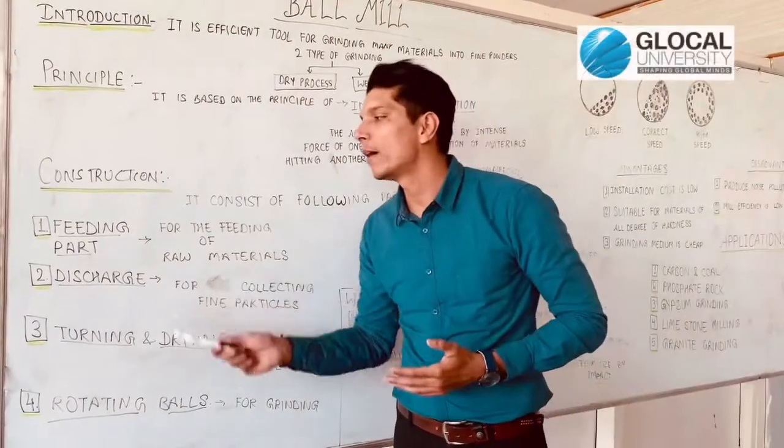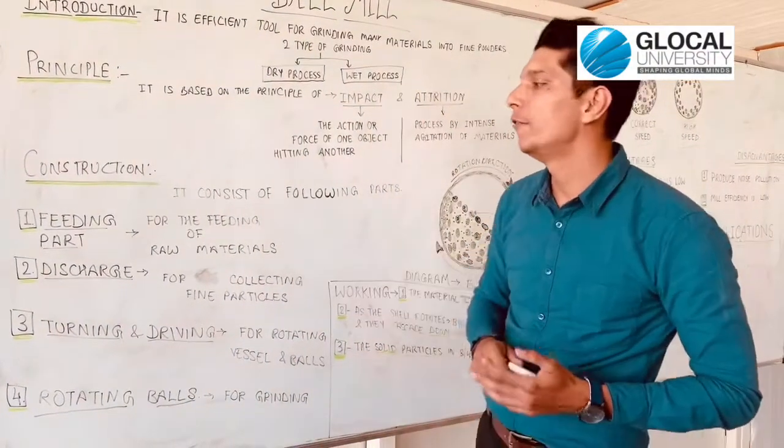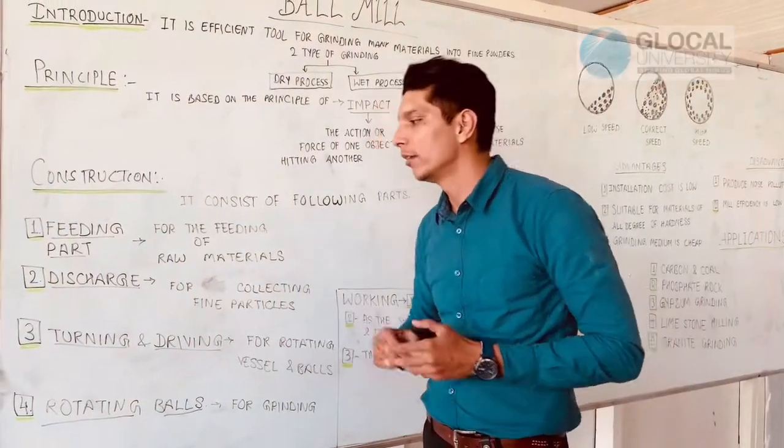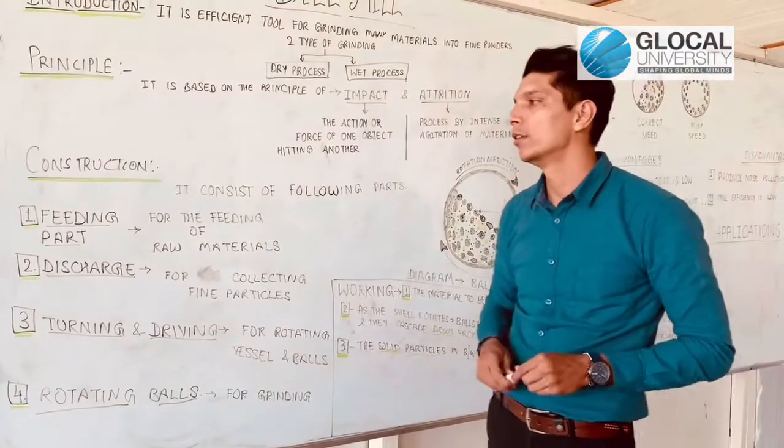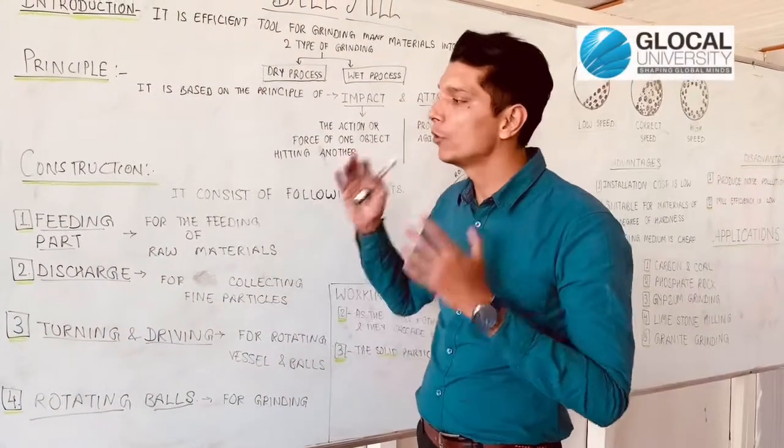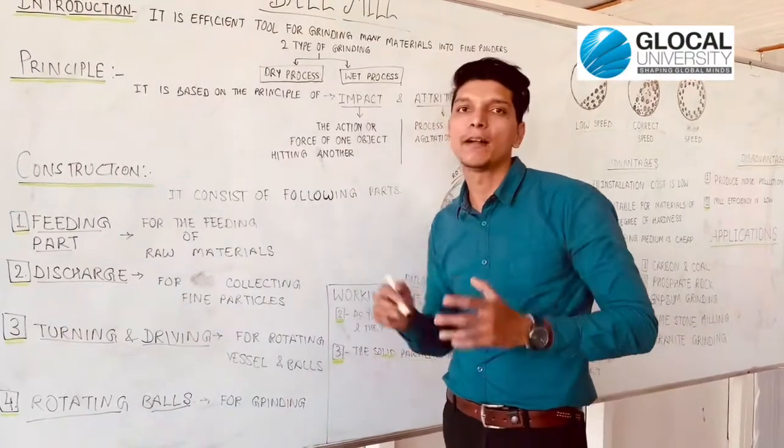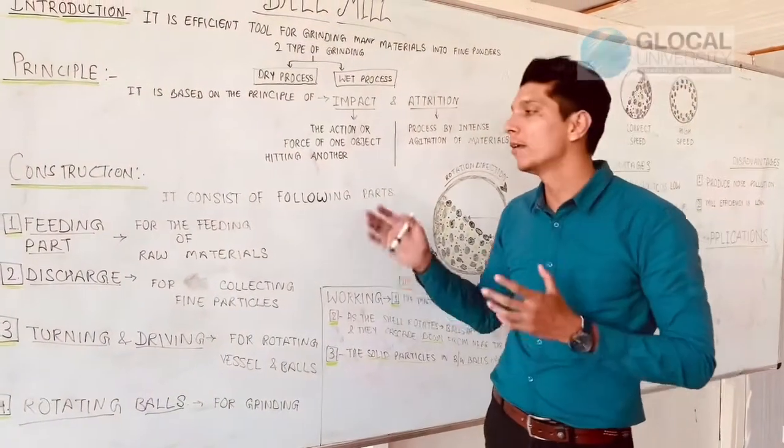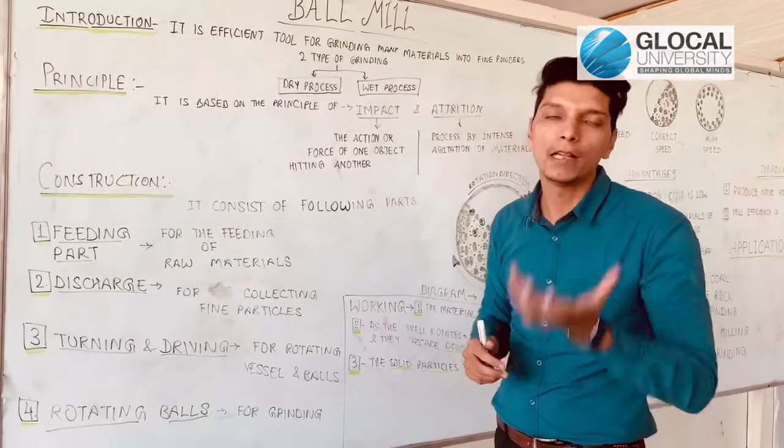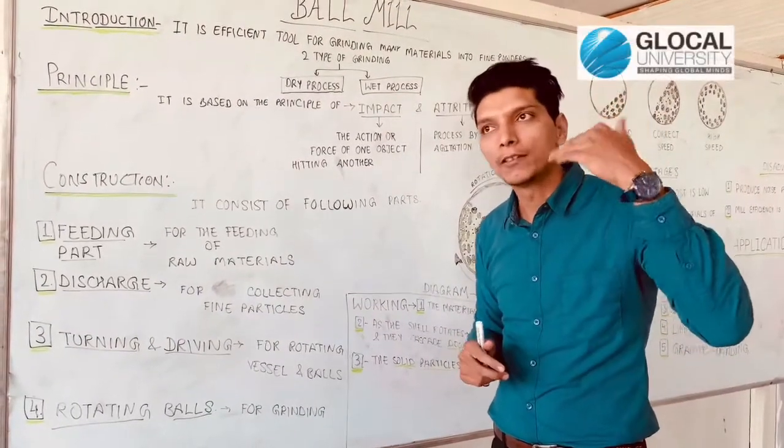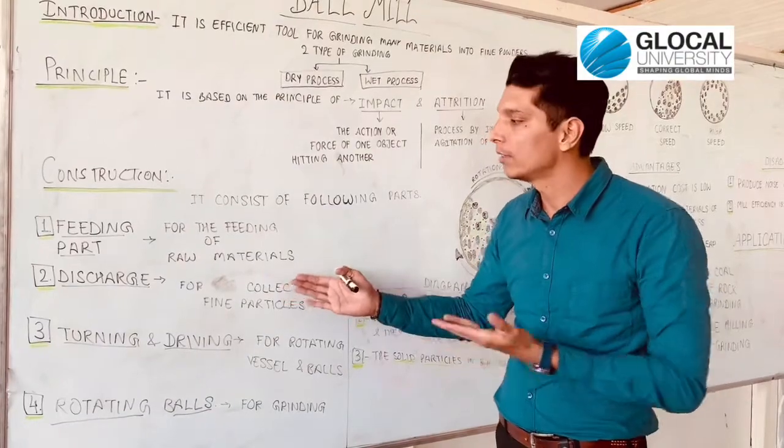There are different parts of ball mill. First is feeding part, second is discharge, next is turning and driving parts, and last one is rotating balls. Feed part is used to insert the raw material in ball mill. Discharge part is where fine particles after size reduction are collected.